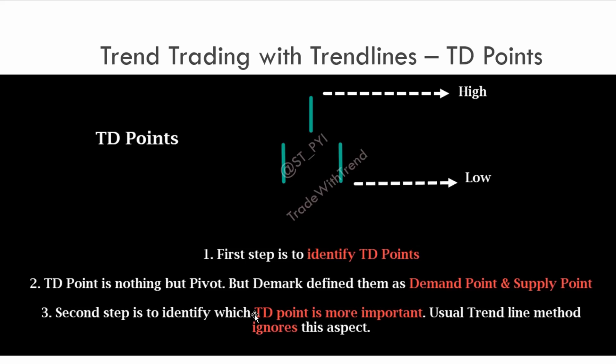Traditional trend line methods actually ignore this approach. You can take any number of points on a chart and connect them — that is how we've all learned trend lines. But by the time I am done with this two-part series, your way of looking at trend lines will change forever. What Mr. DeMarc has done is define precise ways of identifying relevant points, and by connecting those points, you get a relevant TD line — that is, a trend line.